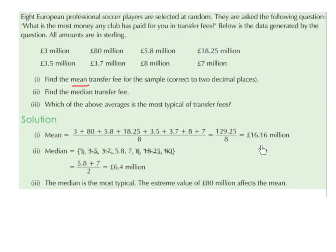Part two: find the median transfer fee. What we have to do is put the numbers into order from smallest to largest. The smallest is 3, then 3.5, then 3.7, then 5.8, then 7, then 8, then 18.25, and then 80 is the largest value. When we have them in order, we choose the middle value.